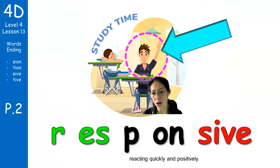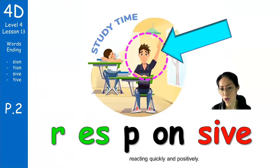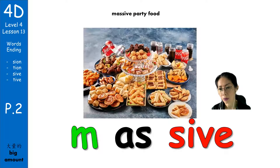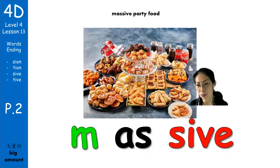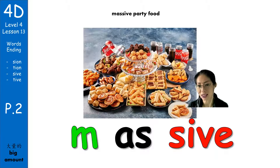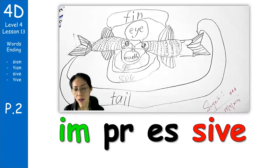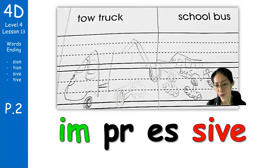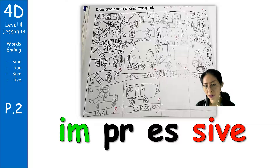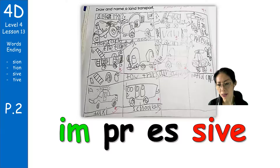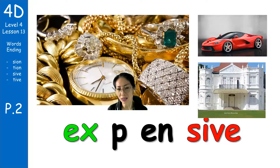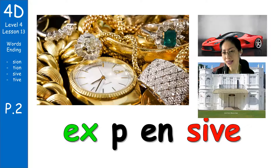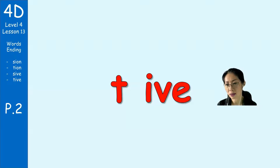Responsive: you give a response to the teacher, you answer questions all the time, you join class — like Lee and Ashley, they are very responsive students. Massive: big — massive. Mr. Duffel has a massive mansion, meaning a big house. Massive party food. Zenqian's drawing is impressive. Expensive: per — expensive. Gold, diamond, nice car, big house — they are all expensive things.